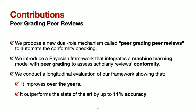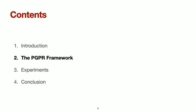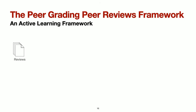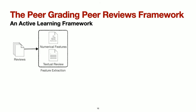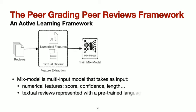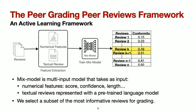Let's go into the details of our framework. We start by collecting reviews from which we extract numerical features such as the recommendation, confidence score, and length. We also represent textual reviews with a pre-trained language model. We then train a model named MixModel, which is a multi-input model that takes the extracted features as input. We then select a subset of the most informative reviews for grading — specifically, the ones where the model prediction is most uncertain.